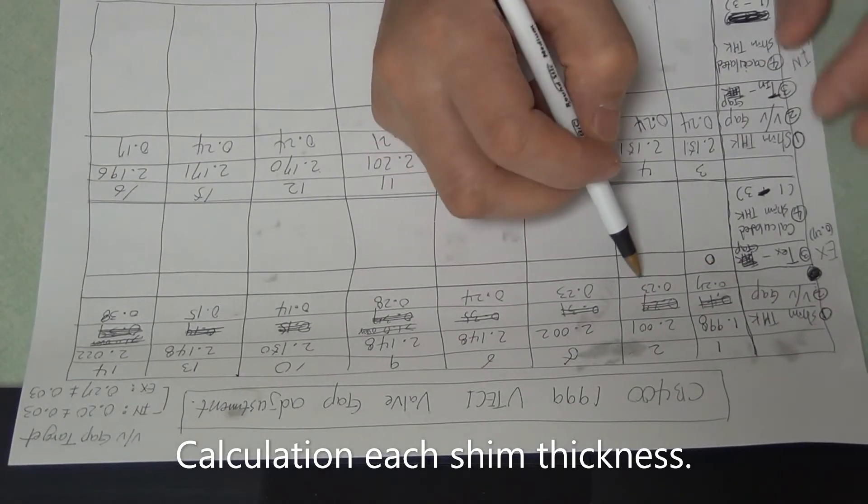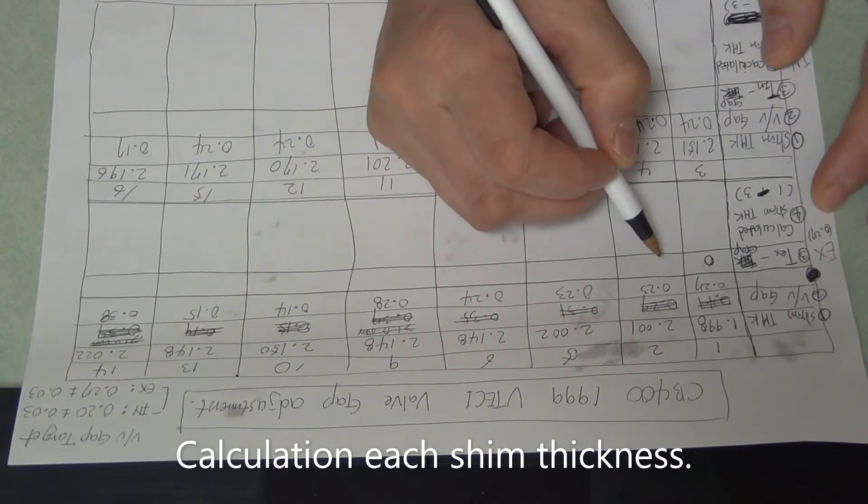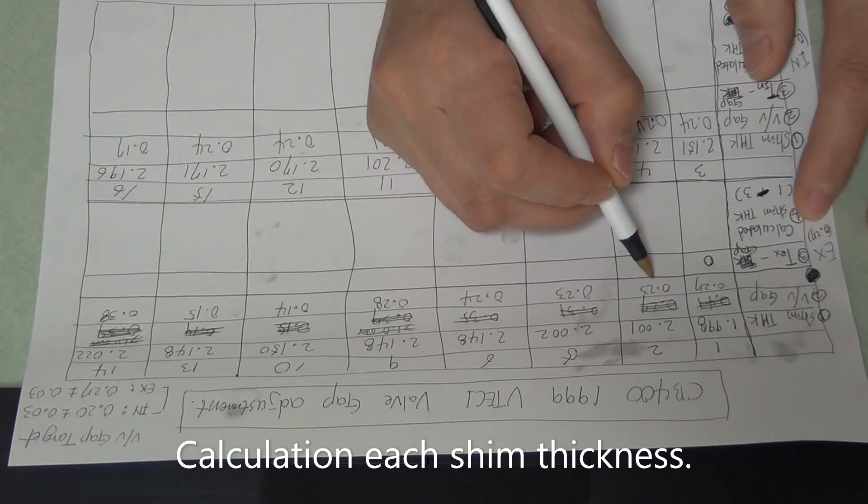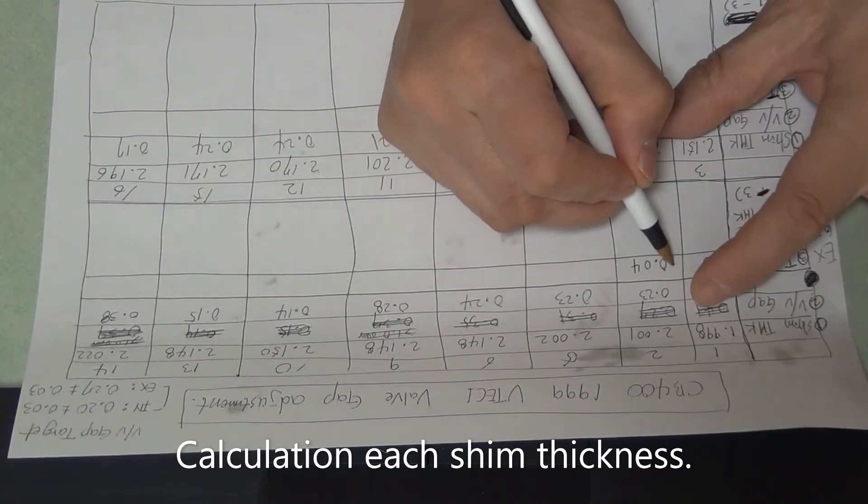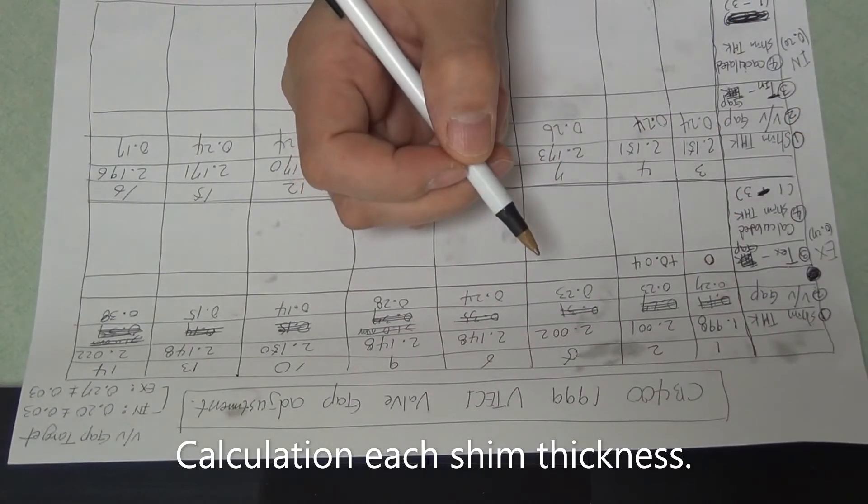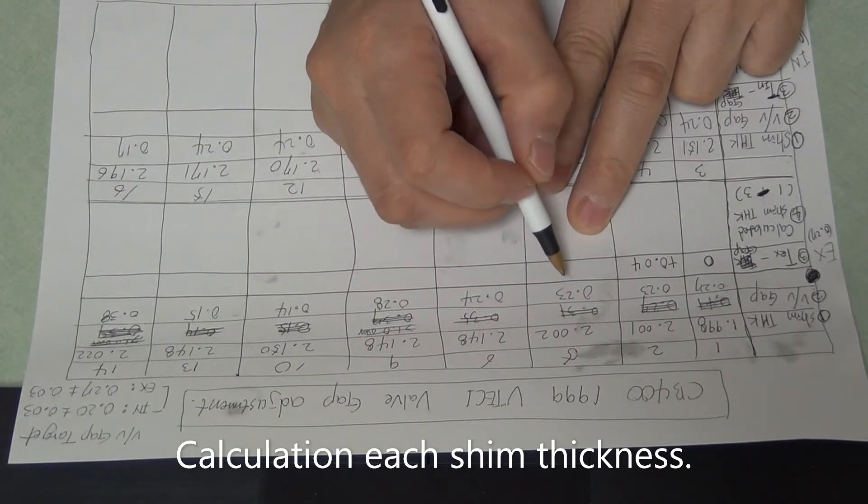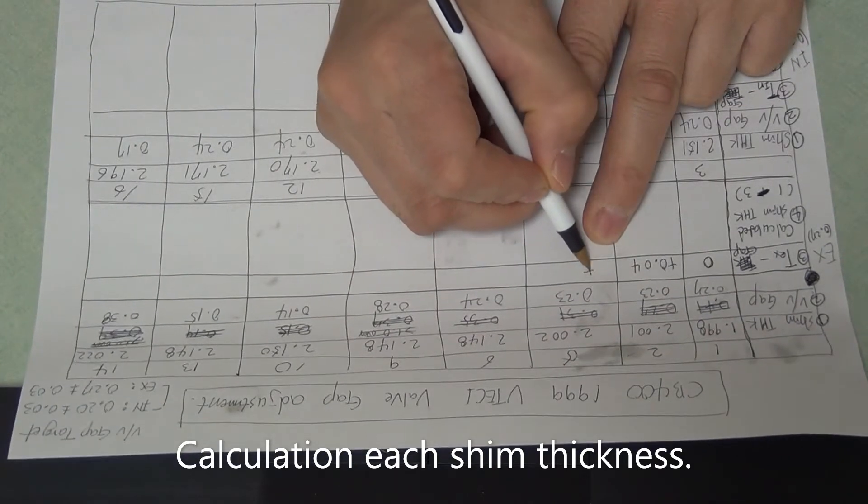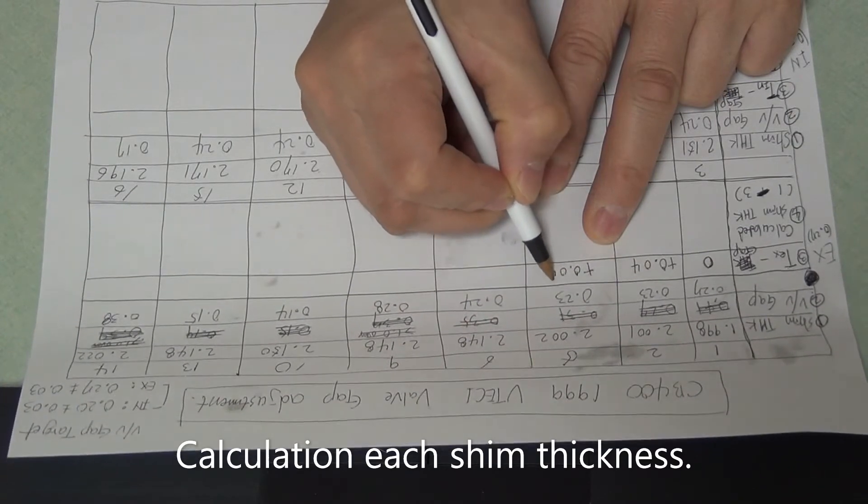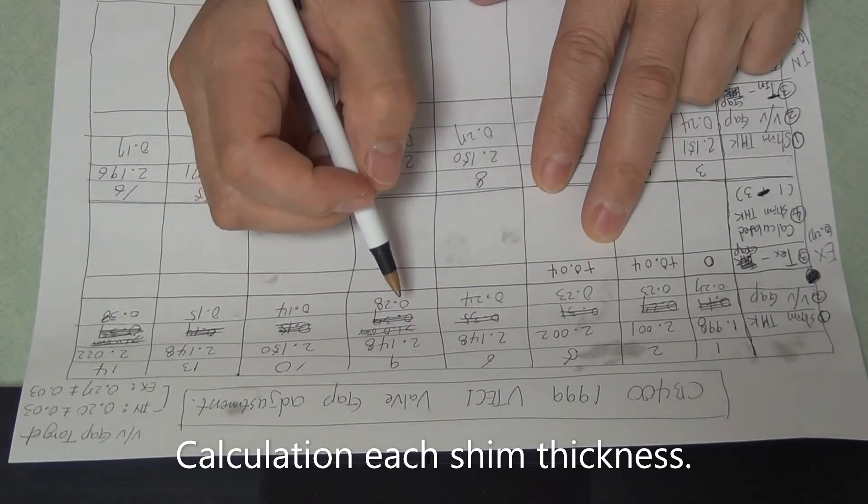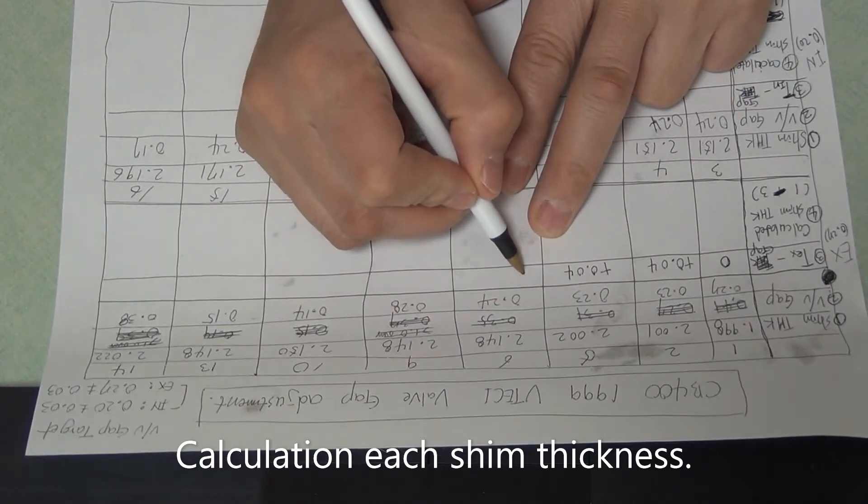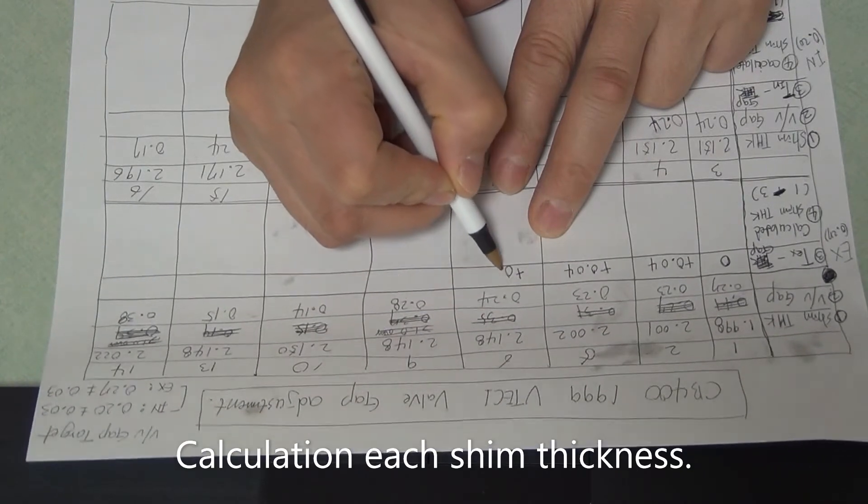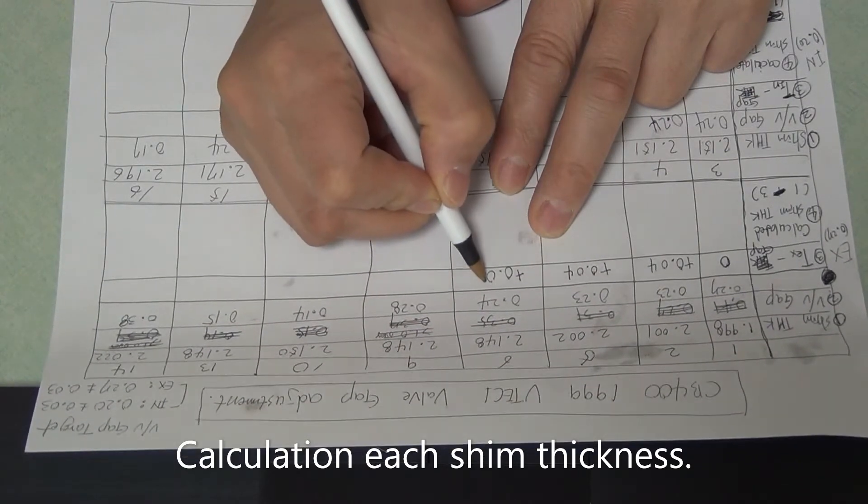And number 2: 0.27 minus 0.23, so 0.04 plus the same 0.27 to 3, so plus 0.04. And number 6 is plus 0.03.